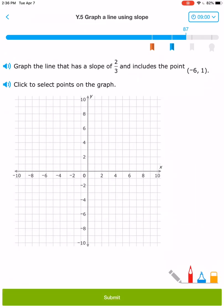(-6, 1). And a slope of 2/3. 1, 2. 1, 2, 3. Those are my two points.